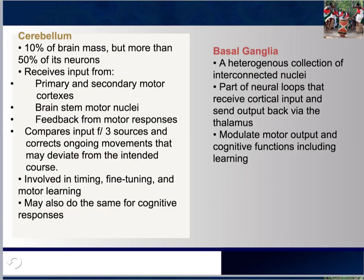Please note that the cerebellum, though it is only 10% of the brain mass, actually has more than 50% of its neurons. It receives input from primary and secondary motor cortexes, brainstem, motor nuclei, and also feedback from motor responses. It compares input from three sources and corrects ongoing movements that may deviate from the intended course. It is believed to be involved in the timing, fine-tuning, and motor learning processes.